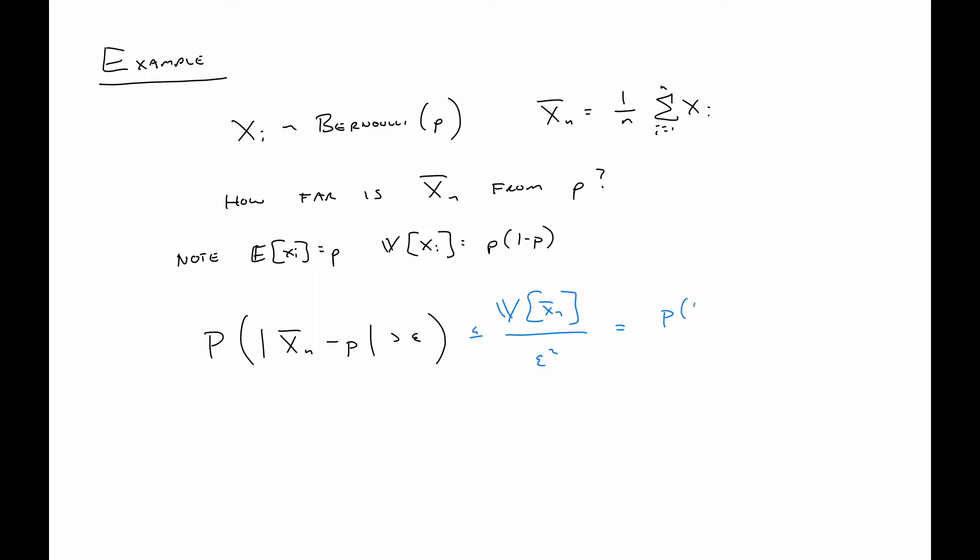Because of the fact that we know the variance of each Xi, we know the variance of the sample mean. We get p times one minus p all over n epsilon squared. Furthermore, we can bound this quantity a little more succinctly by saying this is at most one over four times n times epsilon squared. Why can we do that? Well, perhaps you recall that p times one minus p is at most one fourth. We can see that in this plot here. At most that quantity can be one fourth.